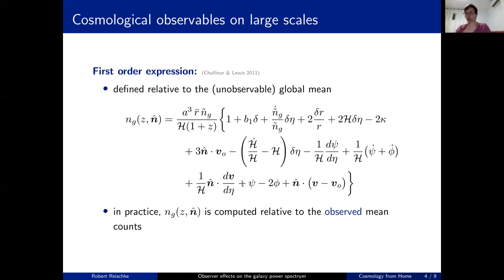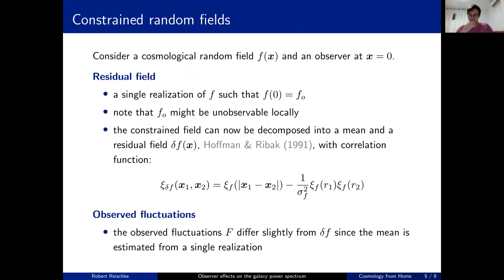These are the usual terms which one has picked up in the calculation of these effects, so that on very large scales where you approach the horizon, these terms become dominant over the other terms and can lead to a huge effect and divergent behavior on very large scales or very small wave number k. One minor detail: in practice, n_g is computed relative to the observed mean and not the theoretically global mean because this is unobservable.